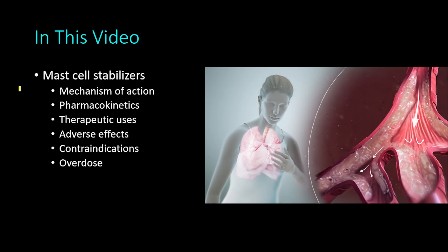Continuing our discussion about therapy for asthma class, in this video we will talk about the mast cell stabilizers. It is important to mention that the mast cell stabilizers have no role in treatment of acute asthmatic attacks, but they are used in treatment of chronic asthma. In this video we will talk about their mechanism of action, pharmacokinetics, therapeutic uses, adverse effects, contraindications and overdose.